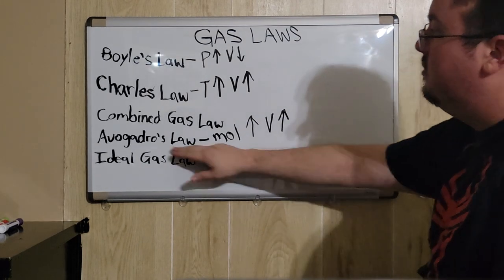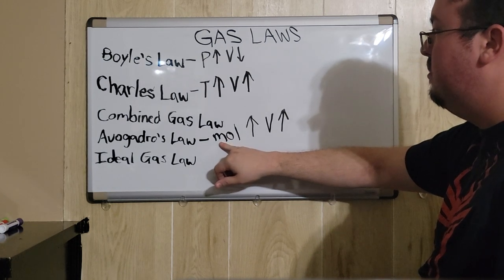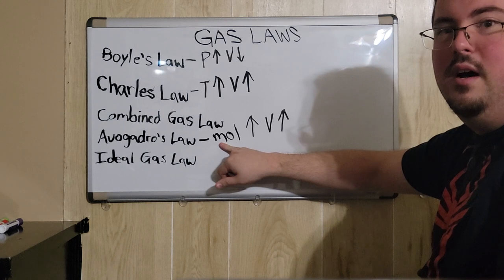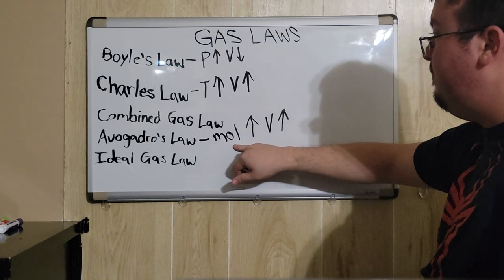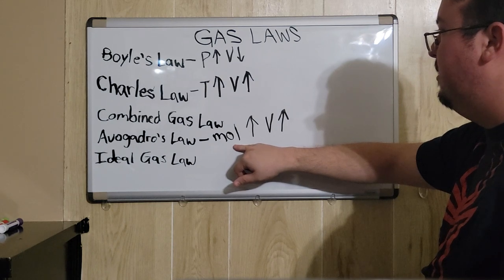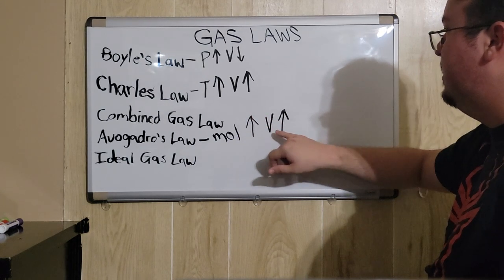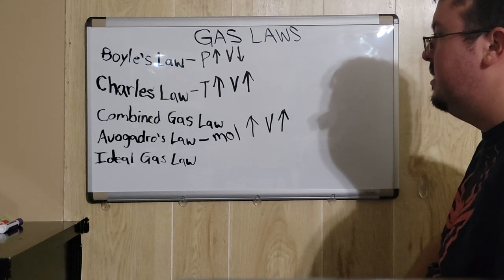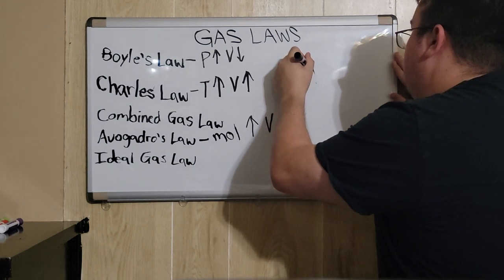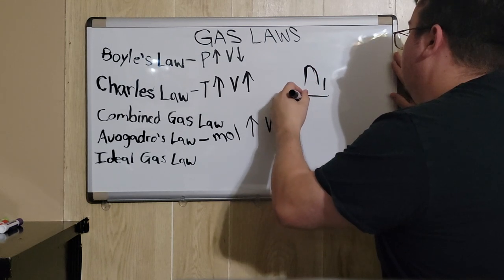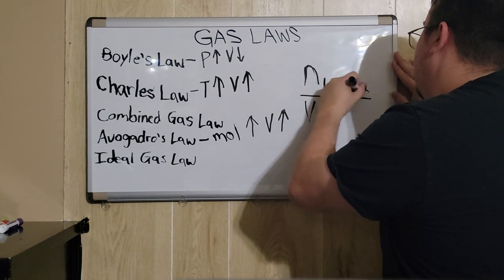Next, we're going to cover Avogadro's law, which establishes that moles, which are the actual number of atoms or molecules, in this case if it's a gas, the number of atoms that the gas is made up of, if that increases, then the volume will also increase. This is actually represented with the following formula, N1 over V1 equals N2 over V2.